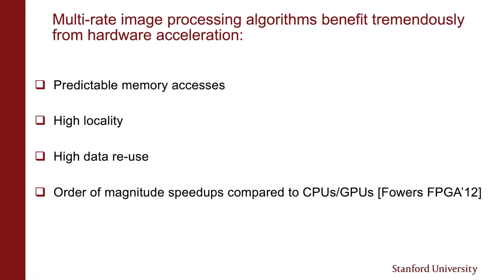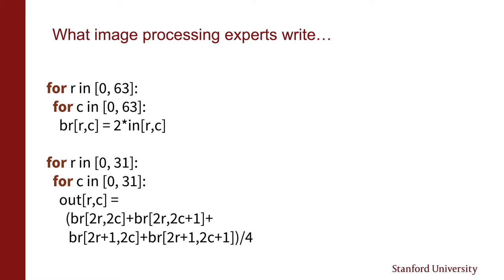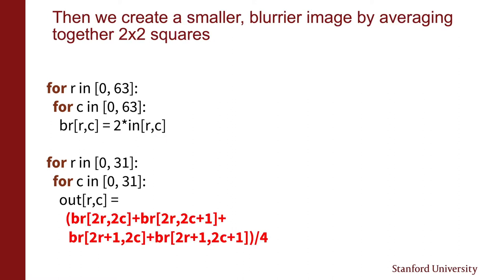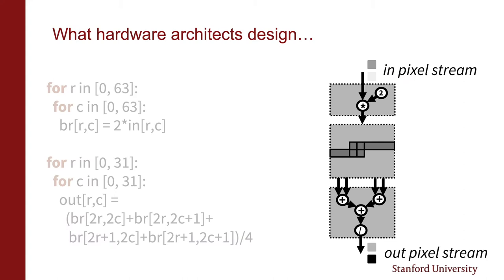Multi-rate image processing algorithms can benefit tremendously from hardware acceleration because they have predictable memory accesses, high locality, and large amounts of data reuse. As a result, they can get order-of-magnitude speedups on custom accelerators compared to CPUs and GPUs. Unfortunately, what image processing experts write — a sequence of loop nests operating on images stored as multi-dimensional arrays — looks very different from what hardware architects would design: a data flow architecture where streams of pixels flow across processing elements connected by specialized high-bandwidth reuse buffers called line buffers.